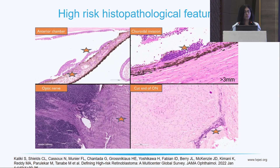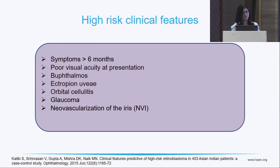As we all know, the high-risk histopathological features are invasion of the anterior chamber, invasion of the choroid more than 3 millimetres, invasion of post-laminar region of the optic nerve or cut end of the optic nerve. There are also certain clinical features which can predict whether a particular eye will have a high-risk feature on histopathology, including symptoms more than 6 months, poor visual acuity at presentation, buphthalmos, ectropion on UBM, orbital cellulitis, glaucoma and neovascularization of iris.